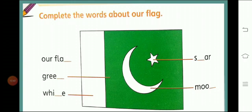Now look at these blanks — one alphabet is missing from each word and you have to guess the missing letter. The words are: flag (missing 'g'), green (missing 'n'), white (missing 't'), star (missing 't'), and moon (missing 'n'). Take out your pencils and fill in the answers quickly. I know all my students are very smart and can do this work nicely.